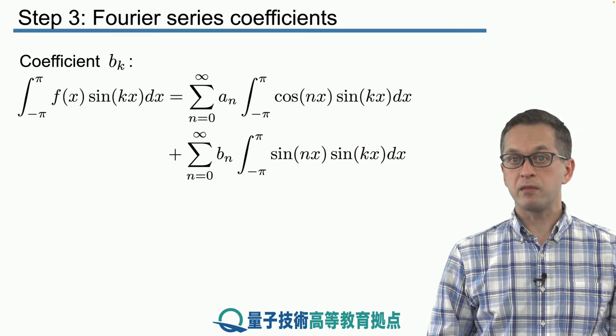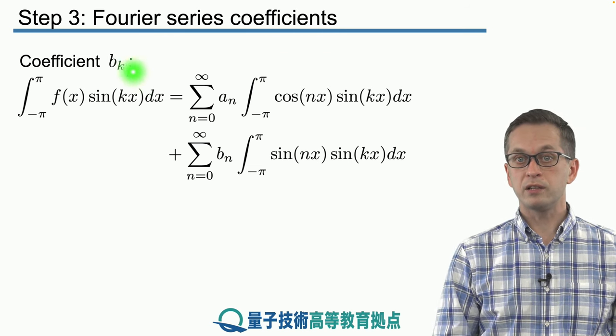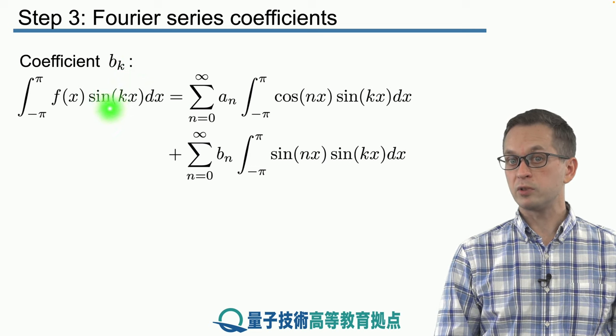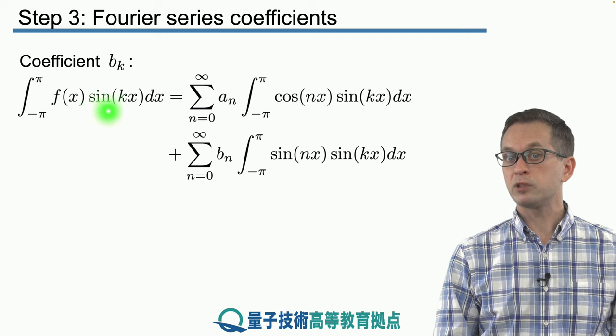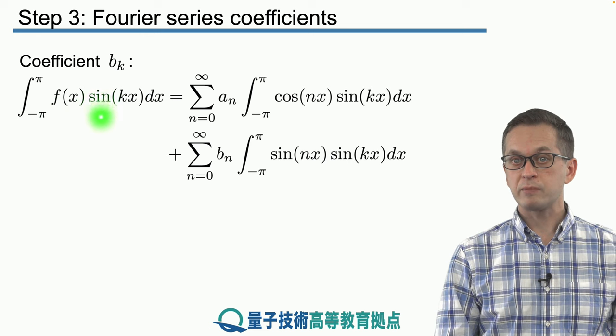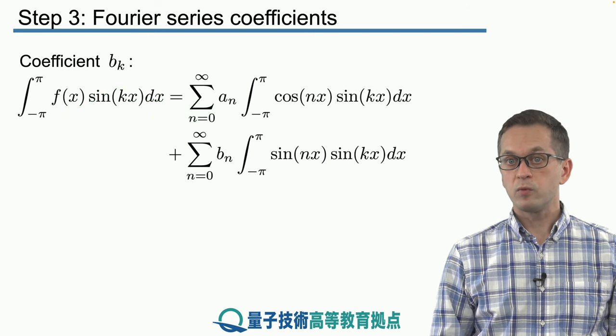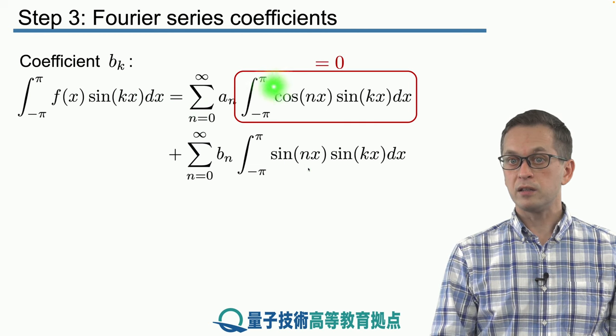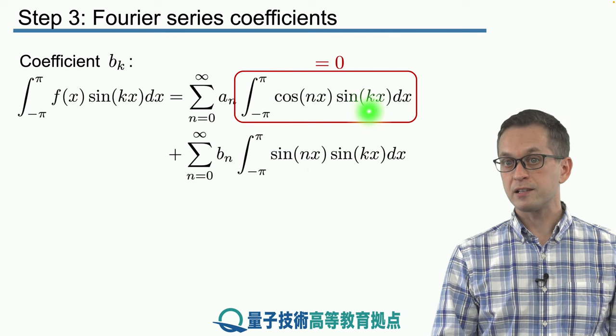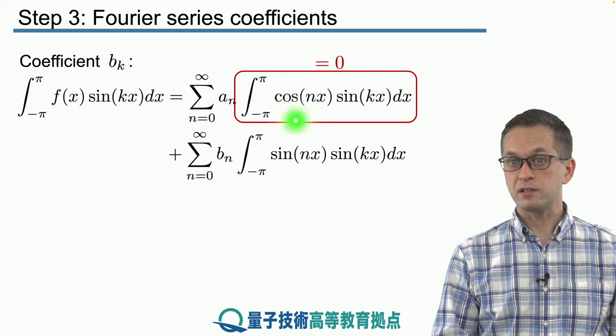Now we can do the exact same thing for the coefficients of b_k. And you can probably guess how to do that. Instead of multiplying our function, instead of taking the inner product of our function with cos(kx), we do the inner product with sin(kx). So we've got the integral from minus pi to pi, f(x) times sin(kx) times dx. And in this case, we can see that these two functions, cos(nx) and sin(kx), are orthogonal. Therefore, this entire sum vanishes, is equal to 0.